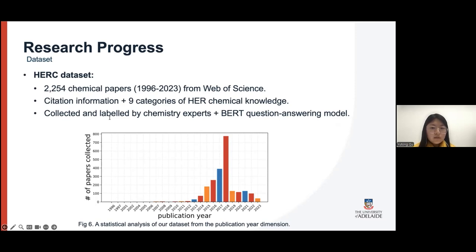After a series of paper selection and validation, we finally get a dataset including over 2,000 papers. They are highly topic related, and those papers published between 1996 and 2023 from the Web of Science database.